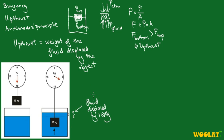Archimedes' principle states that the weight of this displaced fluid is equal to the upthrust acting on the 10kg mass. Looking at the scale readings, when we place the 10kg object inside the water, the reading is reduced from 10 to 6kg. So the upthrust in this case is equal to the 4kg of displaced water.